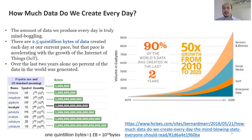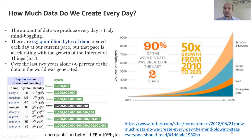How much data do we create per day? The amount of data we produce every day is truly mind-boggling. There are 2.5 quadrillion bytes of data created each day, and that pace is accelerating with the growth of IoT — Internet of Things. Over the last two years, 90% of the data in the world was generated, and since 2010 the amount of data has grown 50 times. One quadrillion bytes is 10 to the 18 bytes, which we call exabytes.